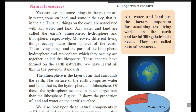In the first part of the lesson — Natural Resources — you can see that some things in the picture are in water, some on land and some in the sky. Birds are in the sky; trees, plants and animals are on the land; fishes are in the water. All things on the earth are associated with air, water and land. So air, water and land are called earth's atmosphere, hydrosphere and lithosphere respectively. Different things occupy these three spheres of the earth.